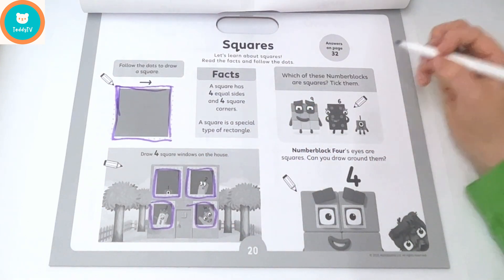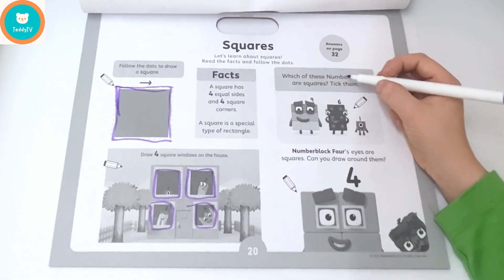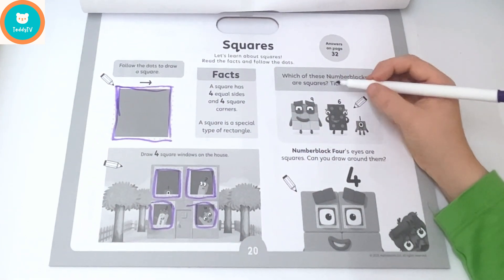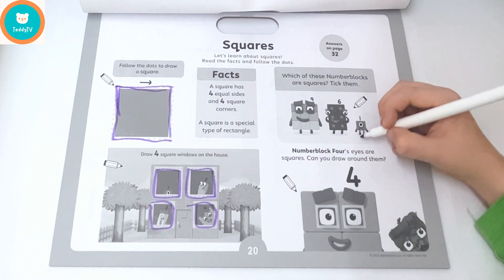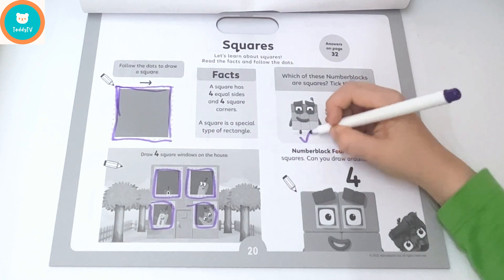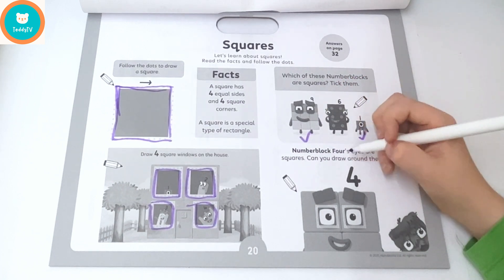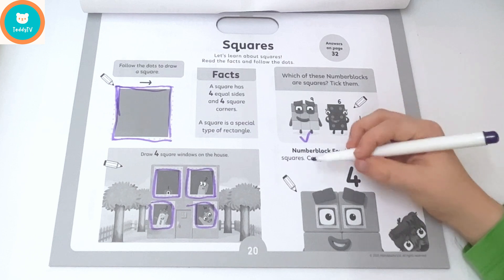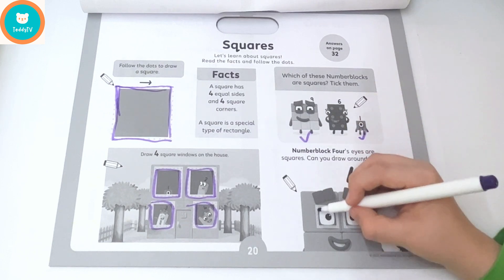There's four! Which of these number blocks are squares? Tick them — tick, tick. Number Block four's eyes are squares — can you draw around them?